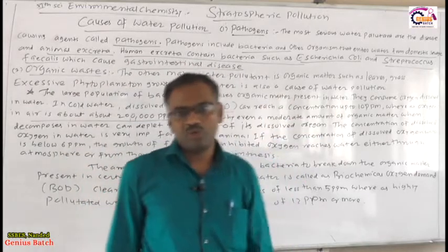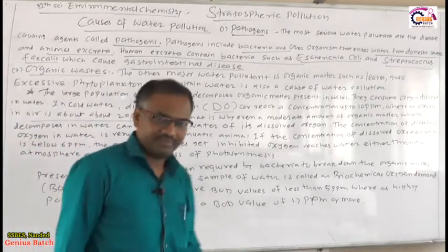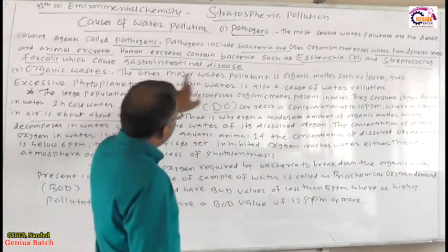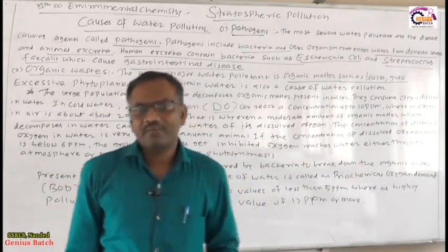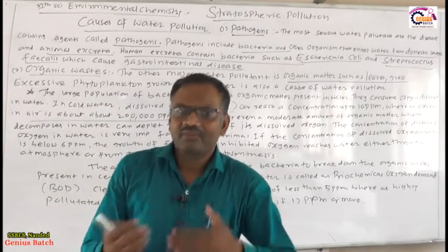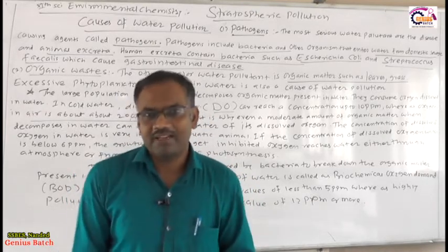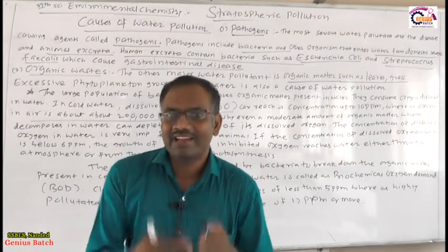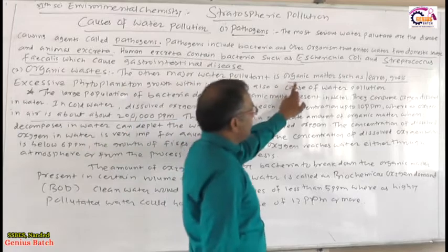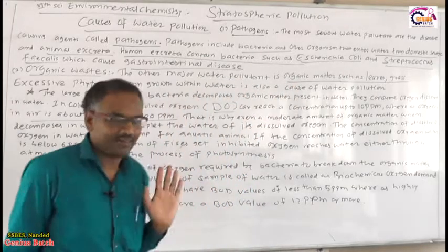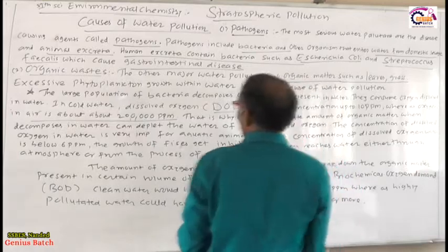The other major water pollutant is organic matter, such as leaves and grass. After rainfall, many types of weeds and grass develop. If that organic matter contaminates water, the water gets polluted.